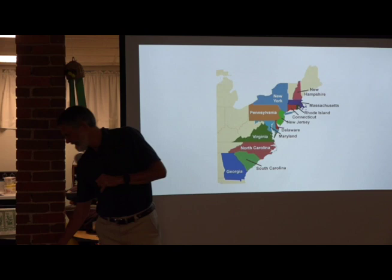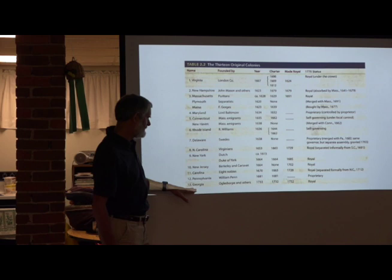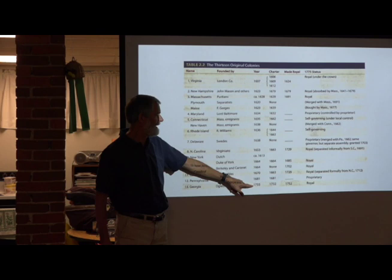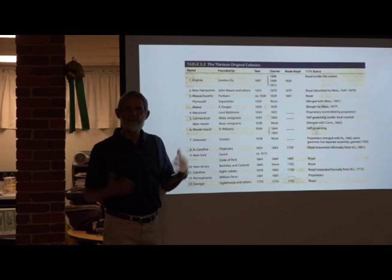Here's a chart of the 13 colonies. The first one, Virginia, 1607; the last one, Georgia, 1733 — that's 126 years. I think that surprises people. We often think the first 13 colonies all came not at once but pretty close to each other, but there was really quite a spread.